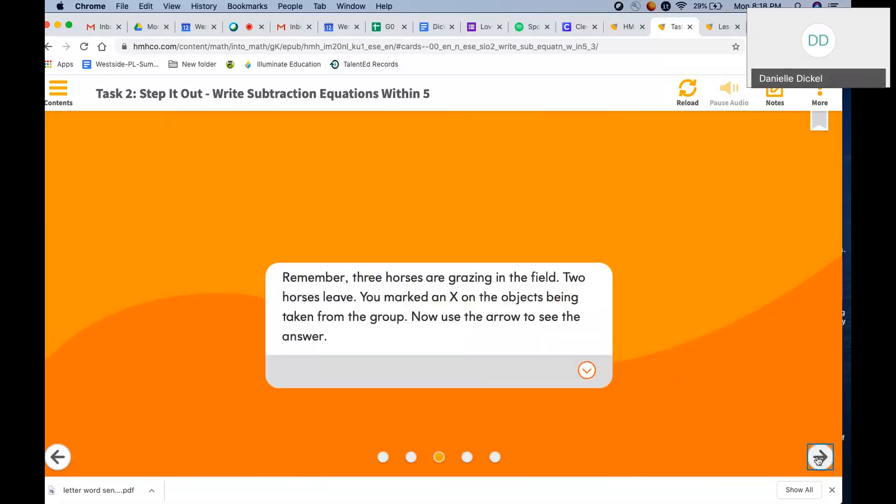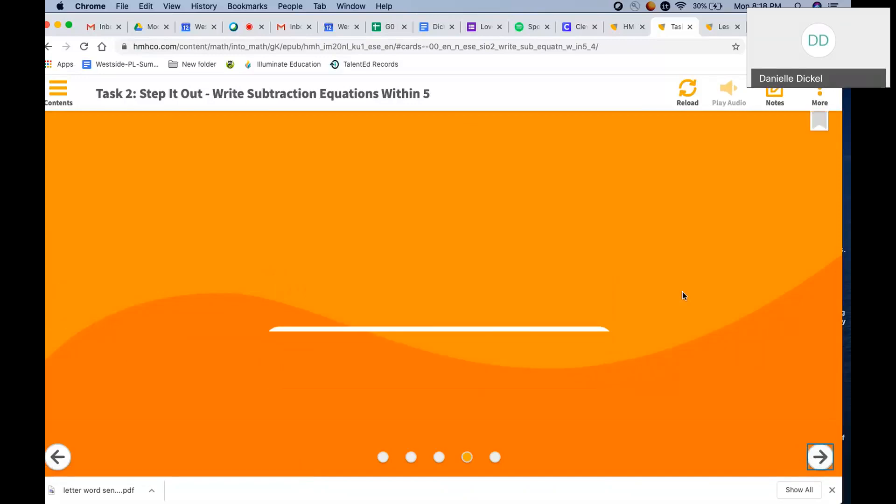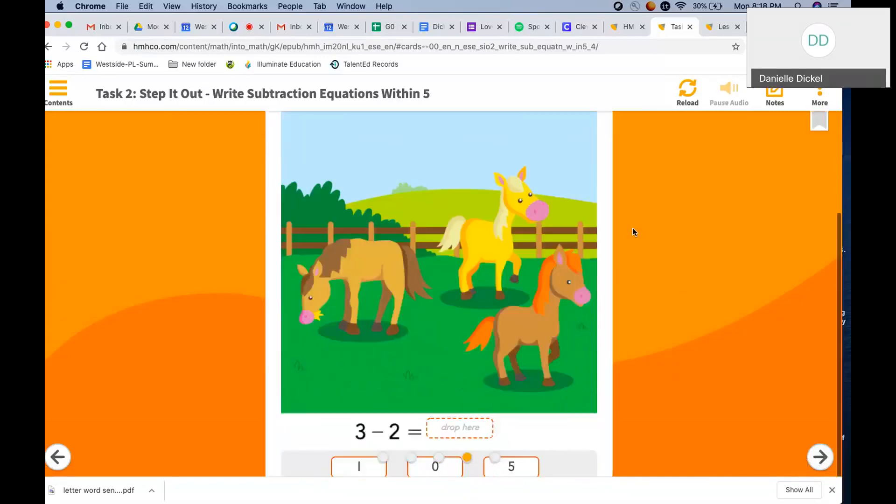So remember we drew an X on one. We had three horses. Two walked away. How many did we have left? One. We have one left.